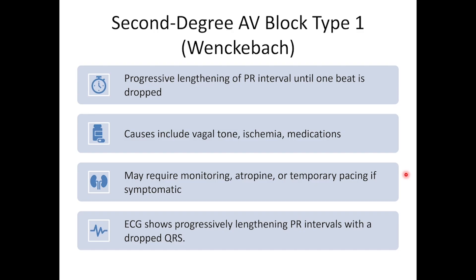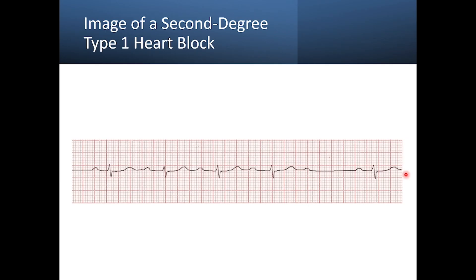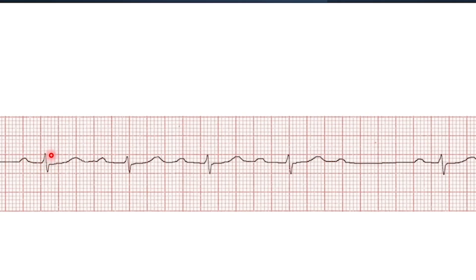Now let's talk about a second-degree type 1 AV block, also known as a Wenckebach. This is a little bit more complex. We have a progressive delay in the conduction of electrical signals through the AV node, and eventually one of the impulses is completely blocked, so we'll see a dropped beat. Looking at the EKG, we can see our P wave and QRS complex, and the PR interval is slowly progressing and getting bigger — greater than 0.2 seconds in some leads.